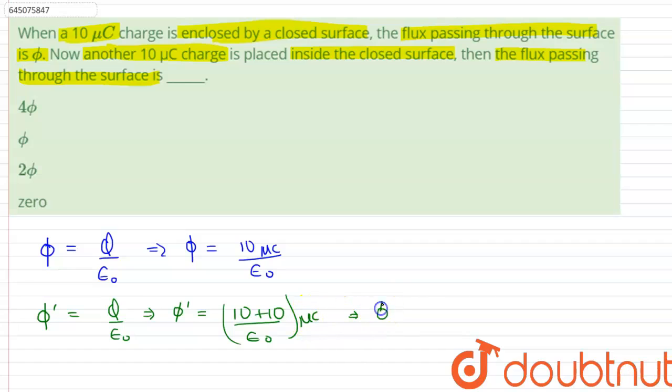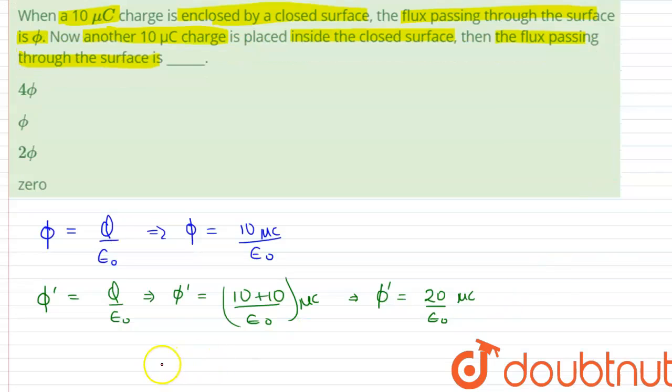Therefore, this implies that phi dash is equals to 20 divided by epsilon naught, and this is 20 micro coulombs. Therefore, on calculation we can say that phi dash is equals to twice of phi. Therefore, the answer is option C.